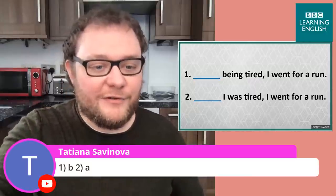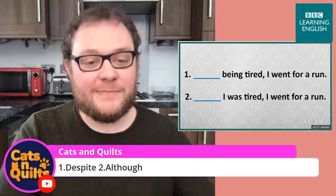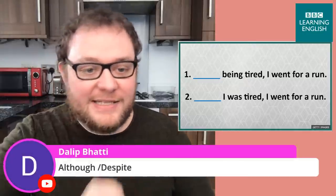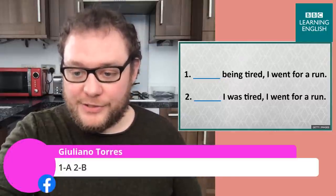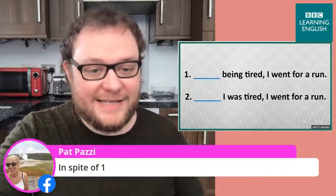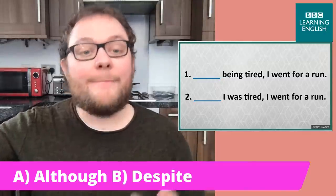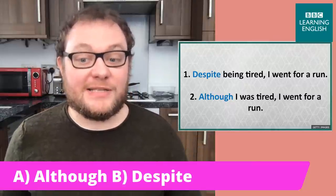We have Tatiana Savinova saying one B and two A. We have Cats and Quilts saying one is despite and two is although. Then Dilip says it's although and then despite. Juliana says one A and two B. And Pat is saying in spite of for number one. Let's have a look at the correct answer. Many of you got it right — well done! For number one, we use despite or in spite of, and for number two, we use although.